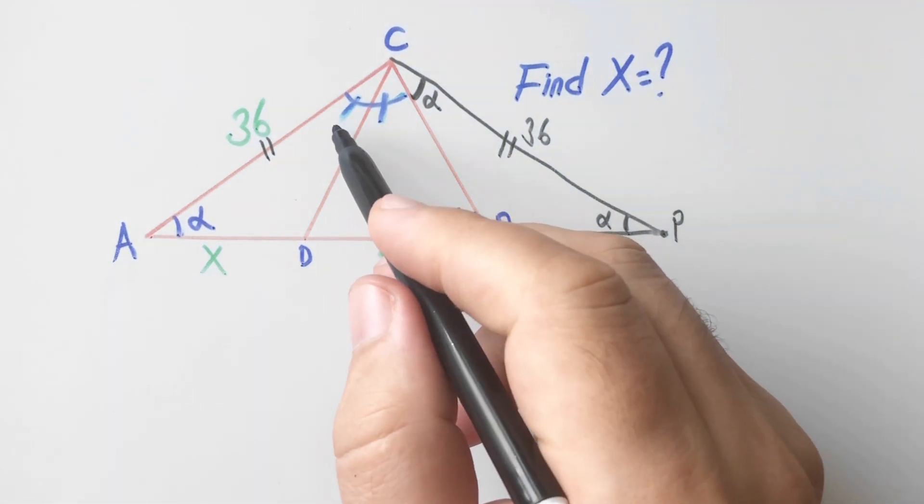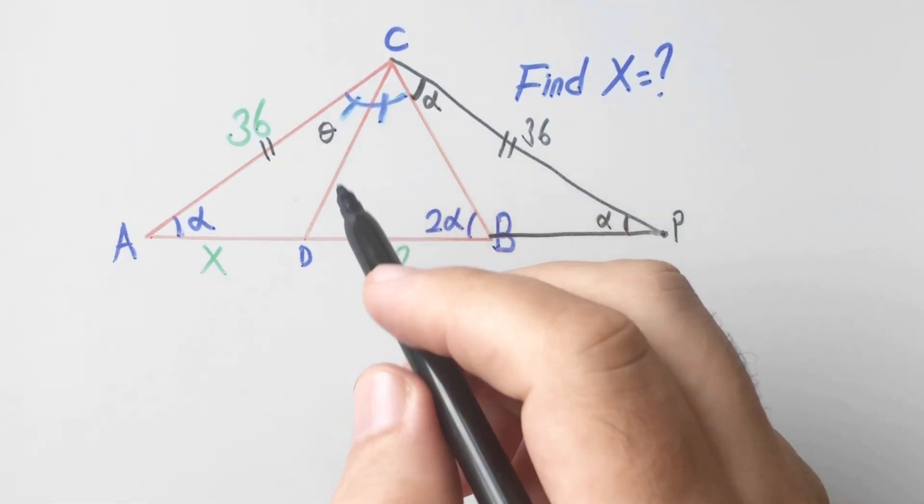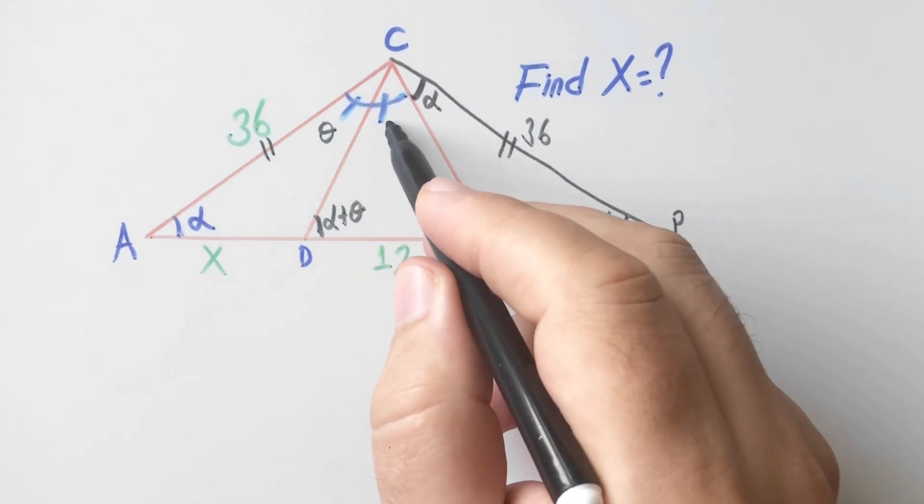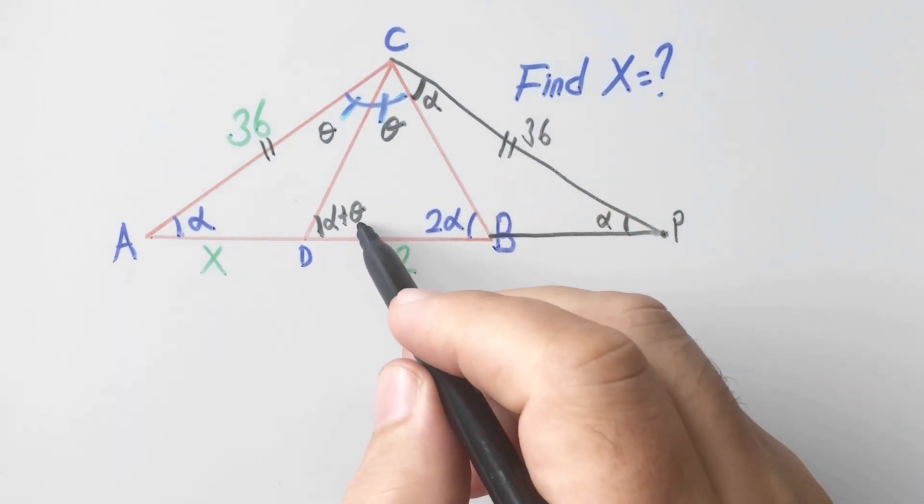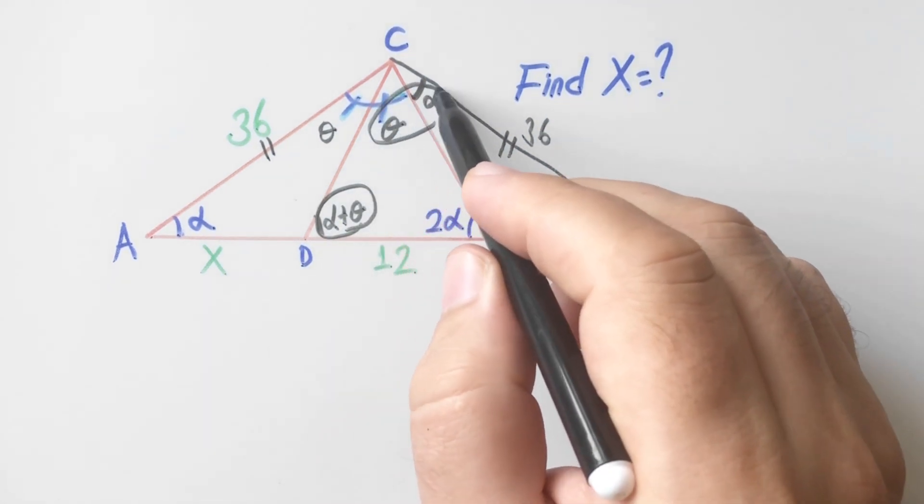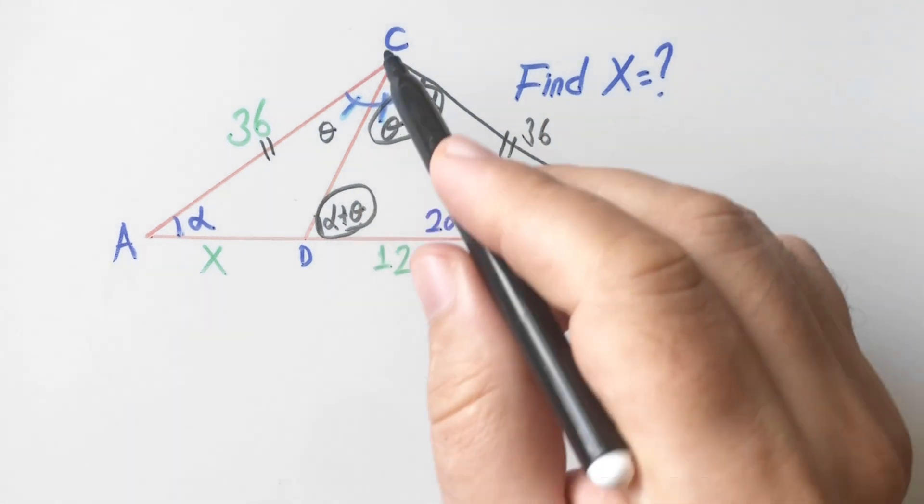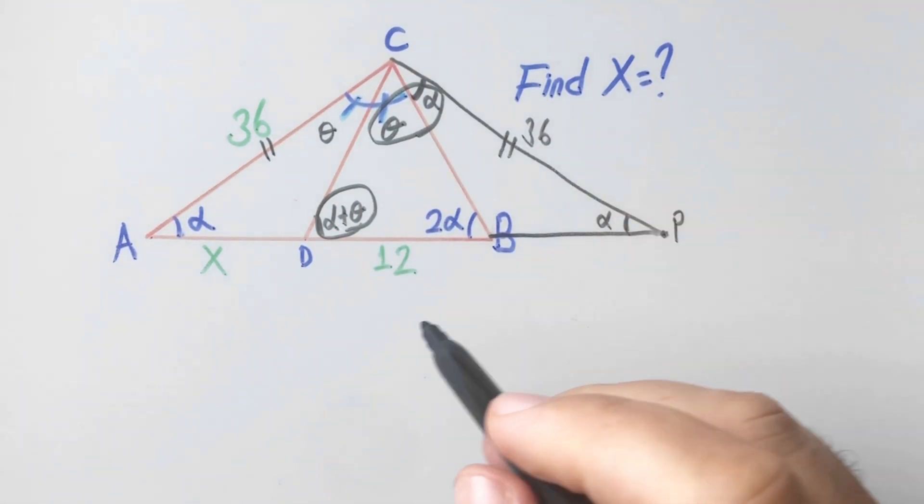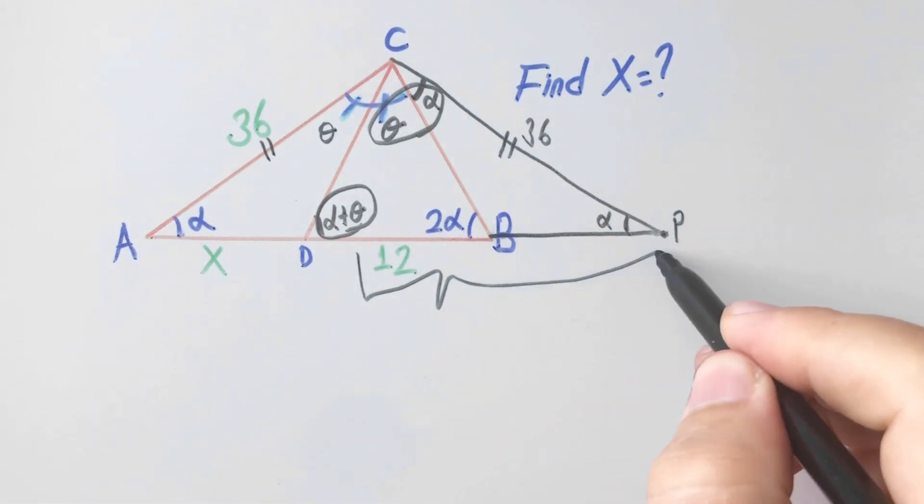Let's call this angle theta. Here will be alpha plus theta and here is theta over 2. This angle is alpha plus theta, this angle is alpha plus theta, so DCP triangle is also an isosceles triangle. Therefore this side will be...